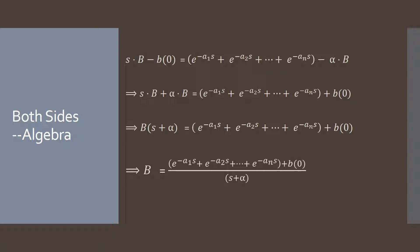Now we have B in terms of S and need to manipulate it algebraically — getting all the B's on the left-hand side and all the S terms on the right. I added B(0) to the other side, added alpha times B to the other side, then factored out B on the left-hand side, and divided both sides by the quantity (S + α). That gives us our final expression for B(S).